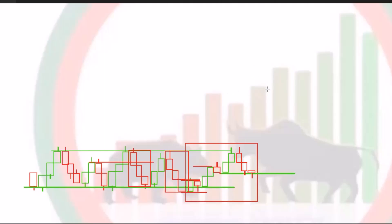Pullback means one party becomes very strong and another party becomes weak. The weak party creates sometimes one candlestick, sometimes two candlesticks, and sometimes three candlesticks. After any breakout, if sellers broke the previous resistance level and market tries to create bearish candlesticks, and if within two candlesticks market closes above the support level — previously it was resistance, now support level — that type of situation we can take as a pullback. But based on market movement and total market structure, we have to analyze whether we will take this one as a pullback or avoid it.